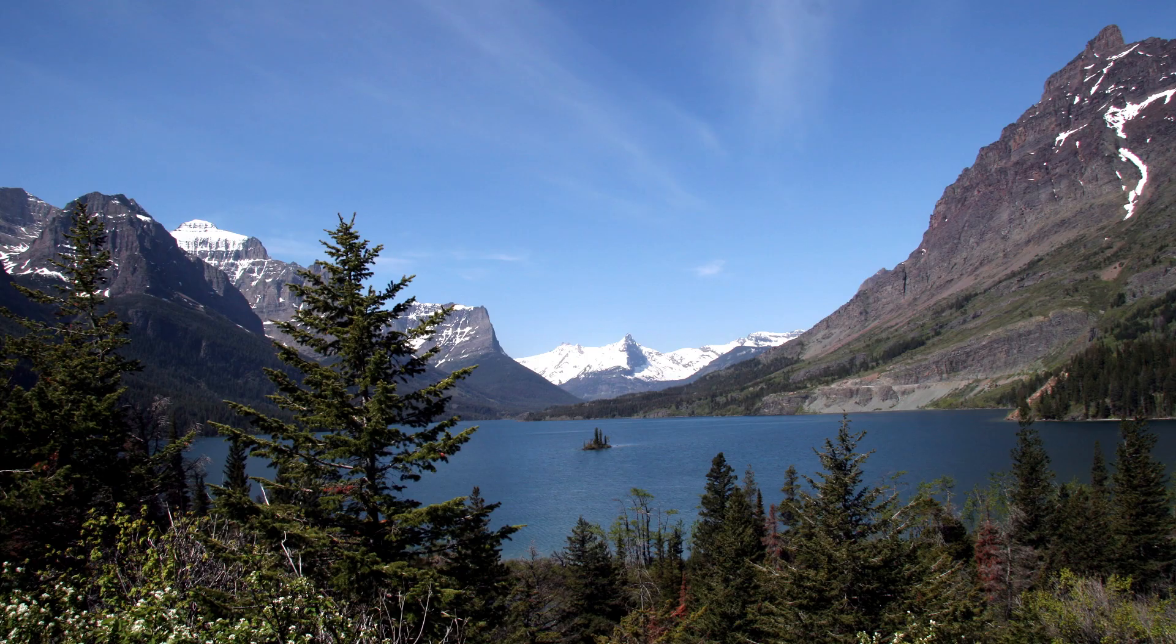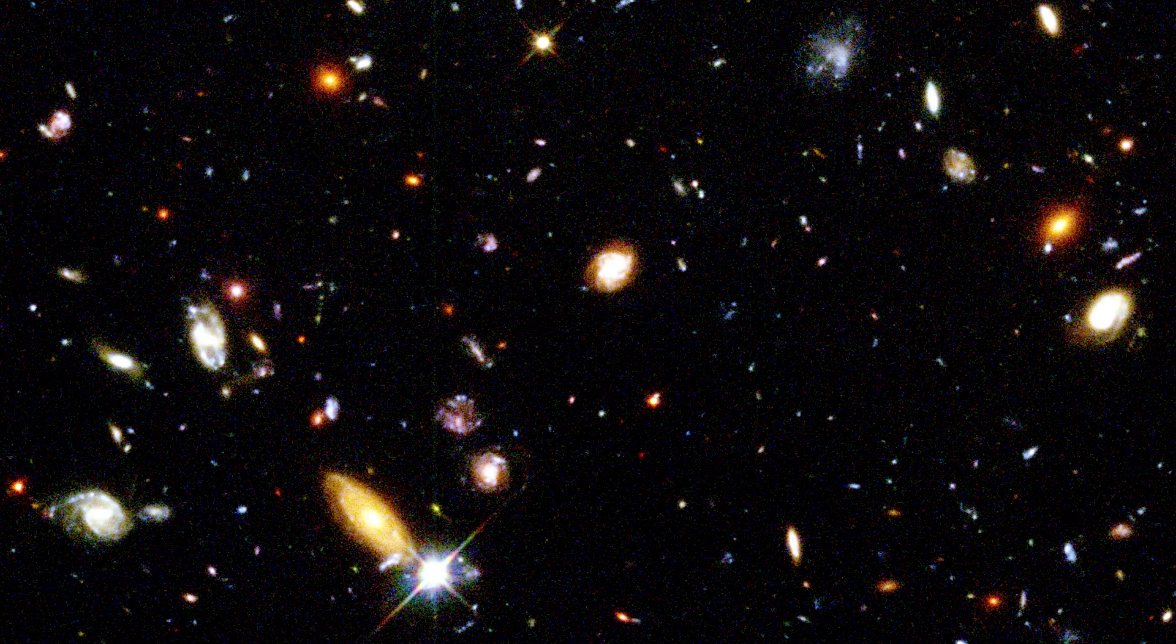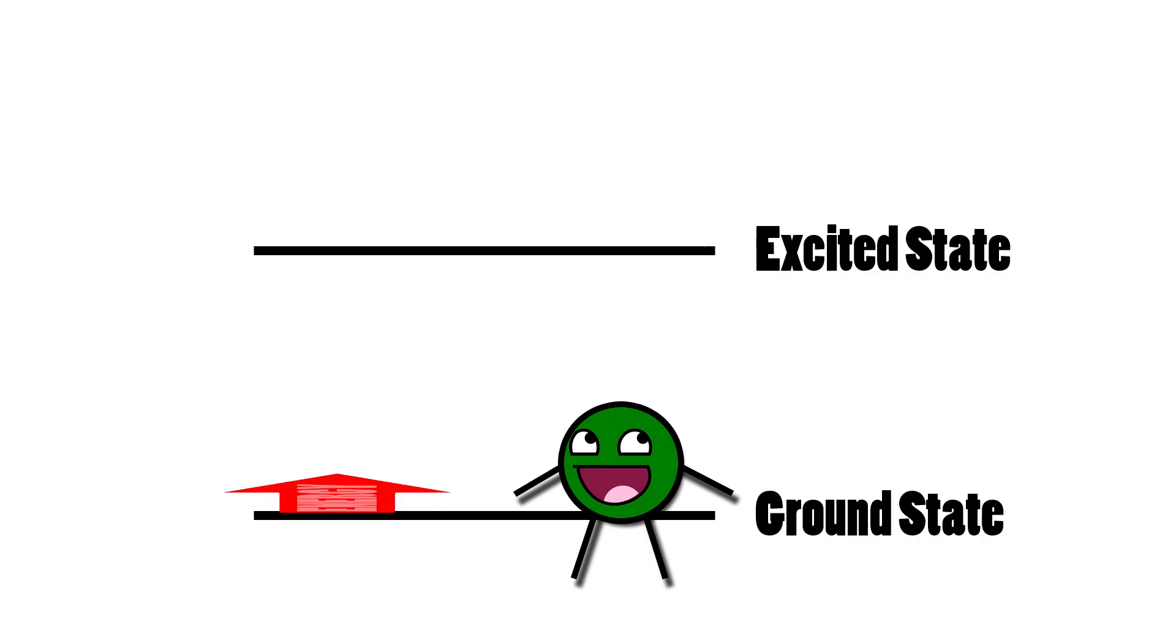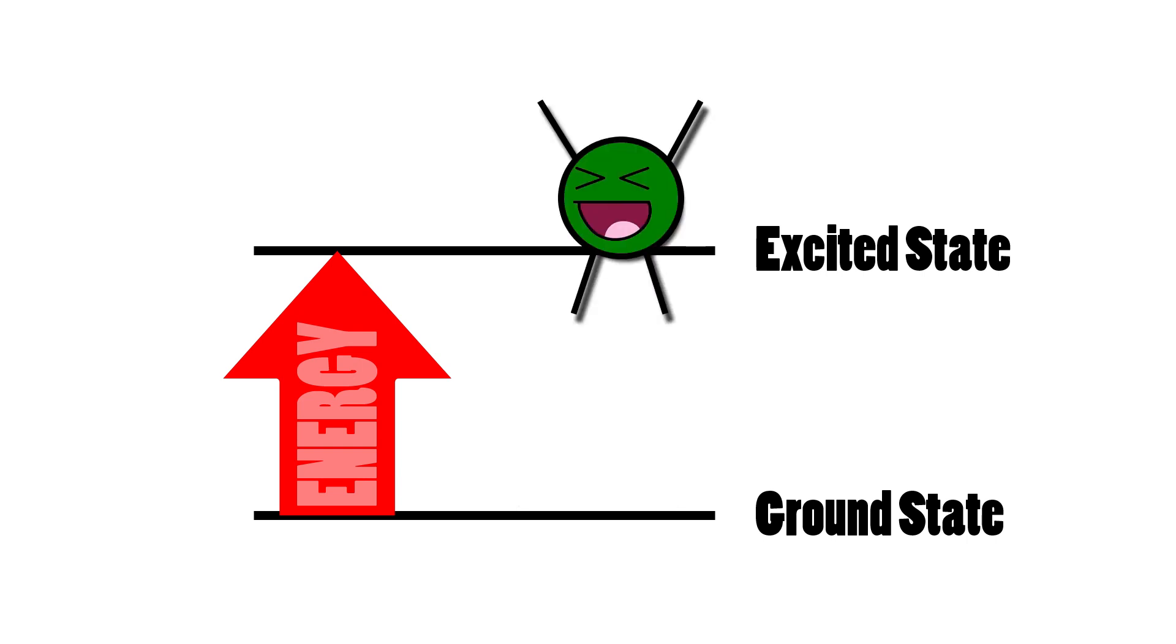In most atoms, the electrons tend to be at the lowest energy they can possibly be. In fact, all of nature and the cosmos tends to be at lowest energy levels. And we call this the ground state. It's as low as energy can be. But when you add energy to an electron, it jumps from this ground state to what is known as an excited state.